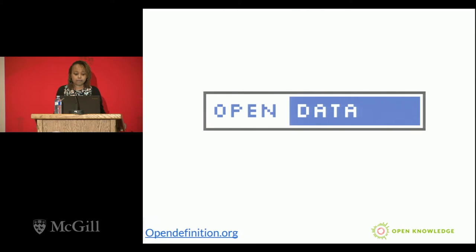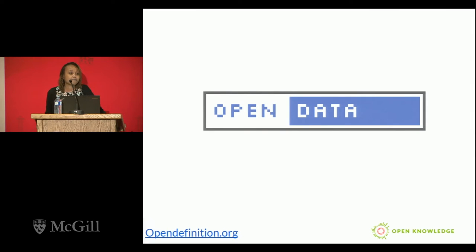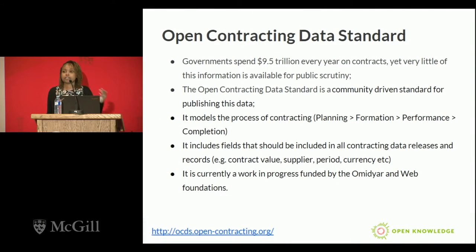When Open Knowledge was founded in 2004, Rufus Pollock and others started by immersing themselves in different communities interested in opening up information. They quickly realized there was no standard definition for what constituted open data. It was necessary to define that so that, for example, if I wanted to look at museum data, even though I'm not from that domain, just by seeing the licenses attached to whatever data I'm looking at, I would be able to understand whether it was open data or not. For that reason, the Open Definition — a standard that defines what open data is — was born and is still being used to date.